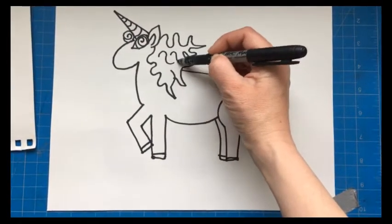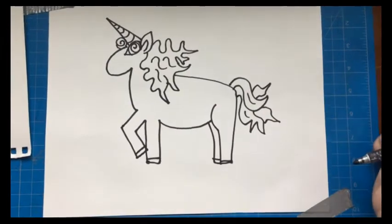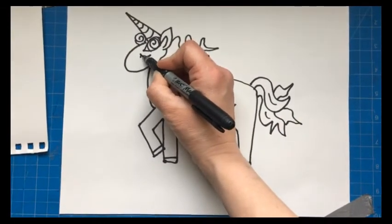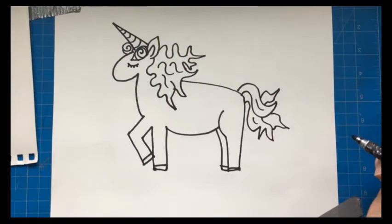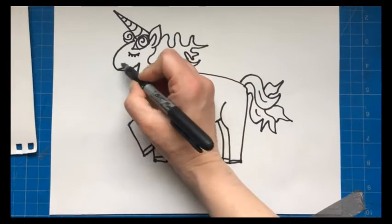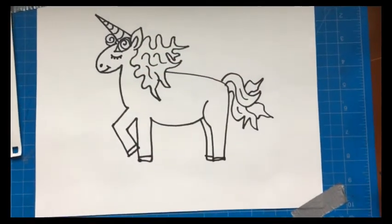Wiggle, wiggle, wiggle. How about a nice eye with some eyelashes? Like the eyes closed. And a smiley face curved line. And then a nostril. And there's our unicorn.